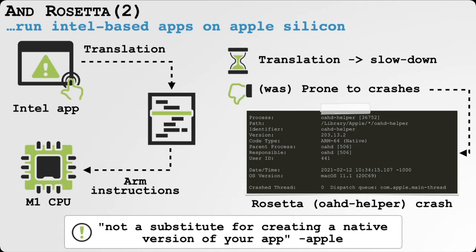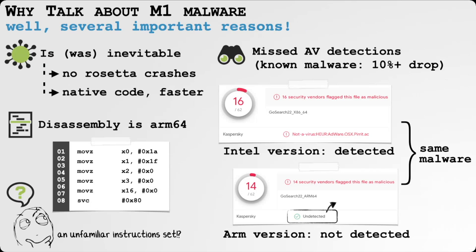Rosetta is the translation technology Apple employs so that legacy Intel applications can still run on M1 Apple Silicon systems. As Apple notes, this is not a substitute for creating a native version of an application. Any time a legacy application runs and Rosetta translates it, that takes some amount of time, so there's a minor performance hit. Rosetta has also had some hiccups, with translations it still struggles with that result in crashes.